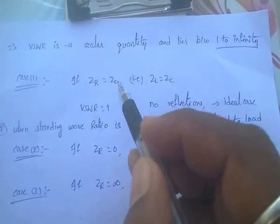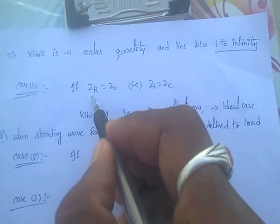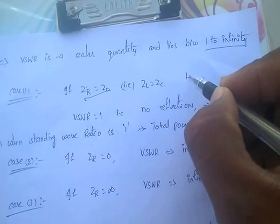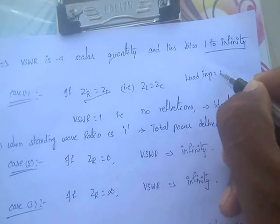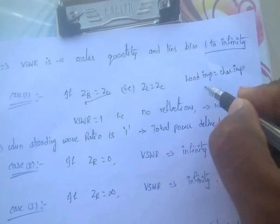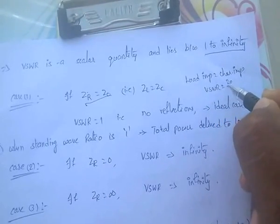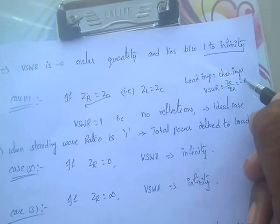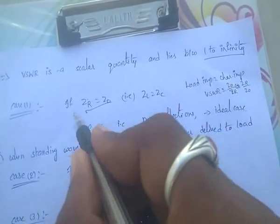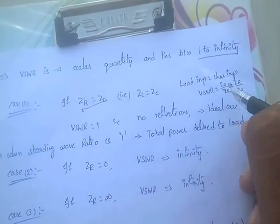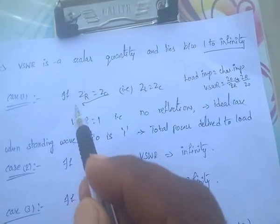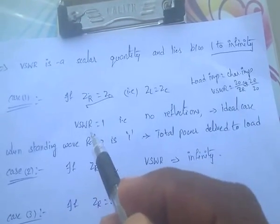Coming to case one: ZR equal to Z0, that means load impedance equals characteristic impedance. In this case, VSWR equals ZR by Z0 or Z0 by ZR — since both are equal, they cancel. The value is 1. If ZR equals Z0, the VSWR value equals 1.